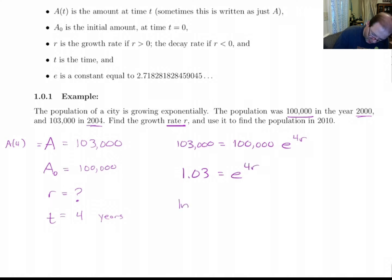Take the natural log of both sides. And so r then is equal to natural log of 1.03 divided by 4. Now I'm going to do that on my calculator, and I'm going to leave it in my calculator. When I do this, I do ln of 1.03, close parenthesis, that's important, divided by 4.